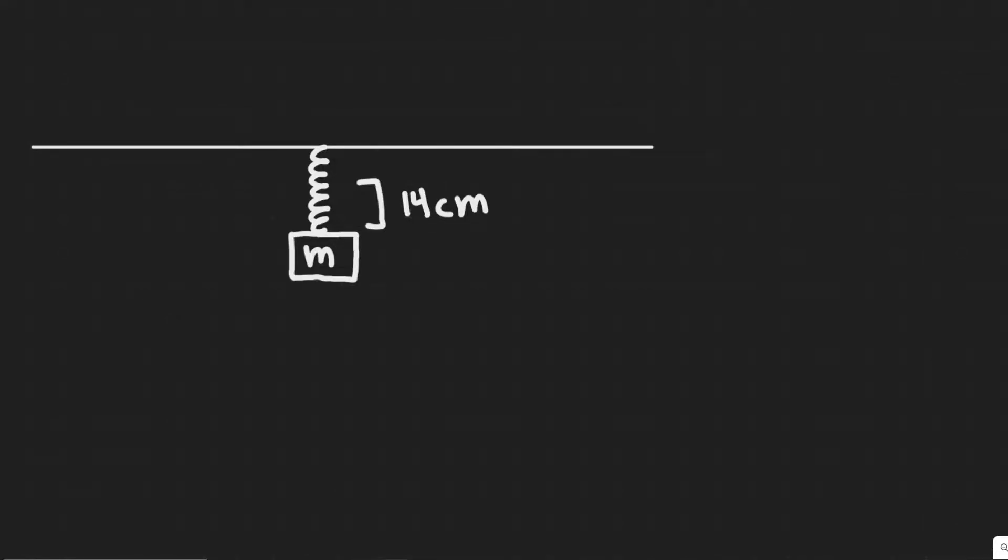Okay, so in this problem we're told an object of unknown mass m is hung from a vertical spring of unknown spring constant k, and the object is observed to be at rest when the spring has extended by 14 centimeters. The object is then given a slight push and executes simple harmonic motion. Determine the period T of this oscillation.